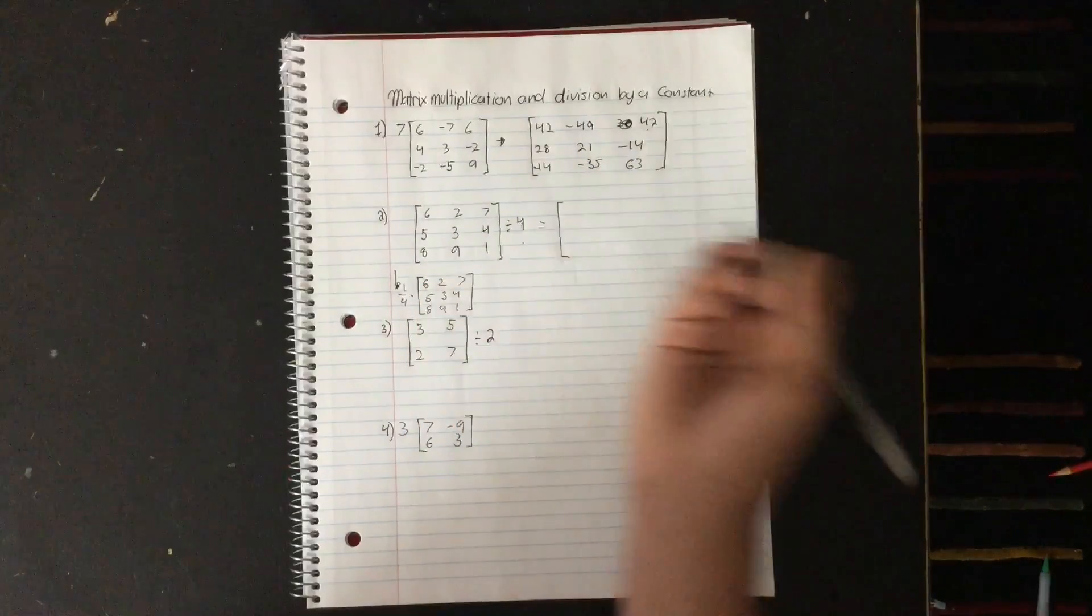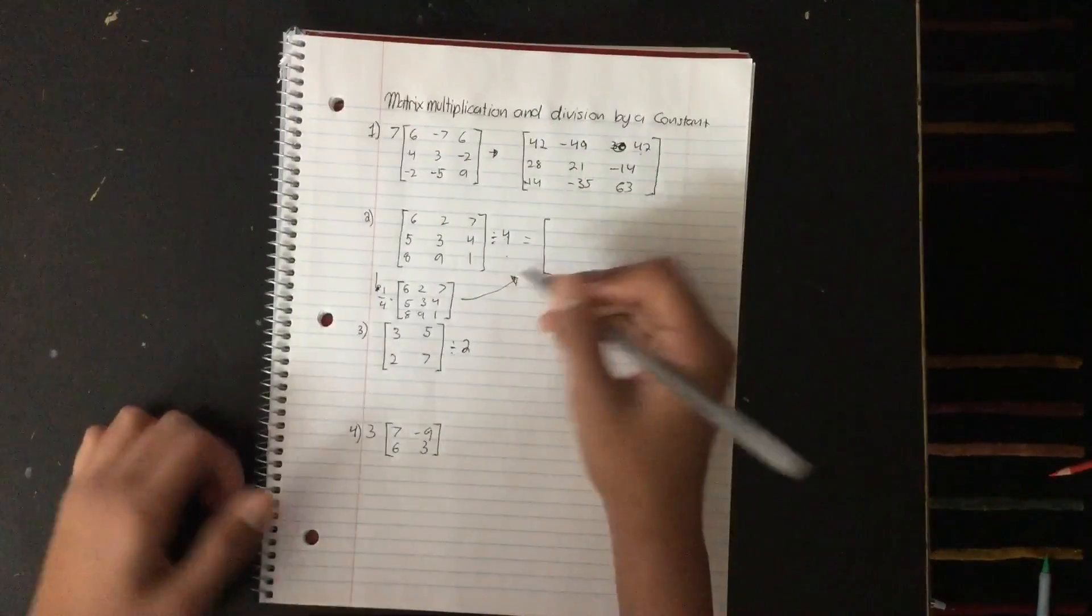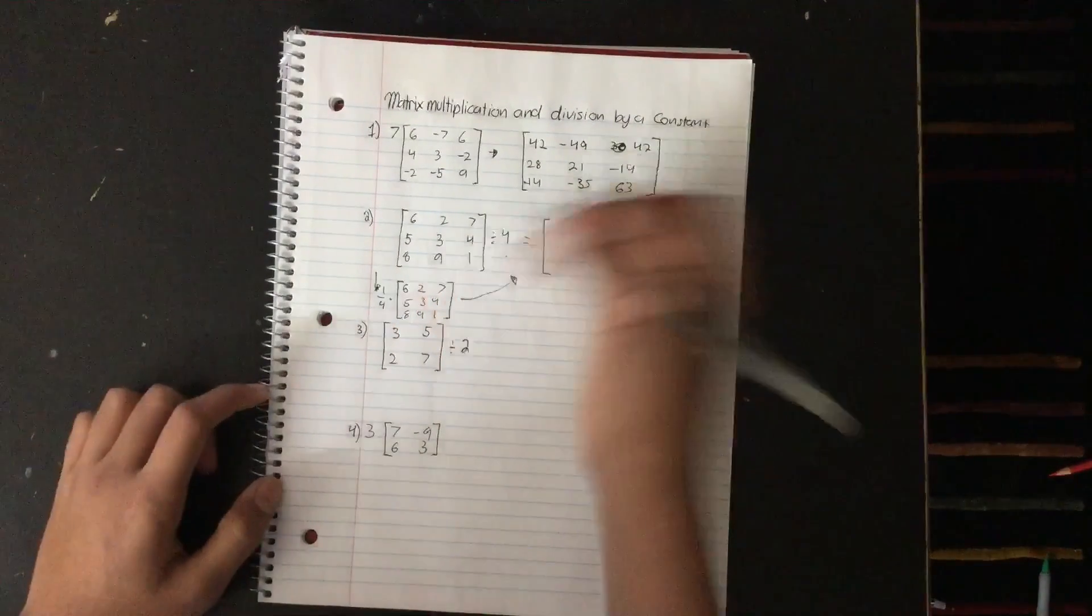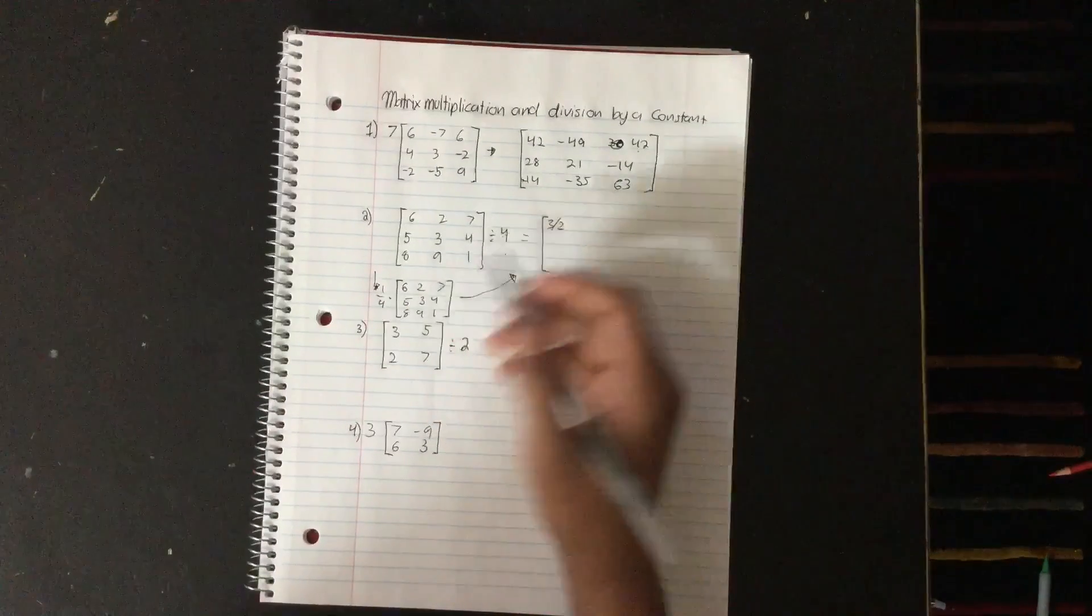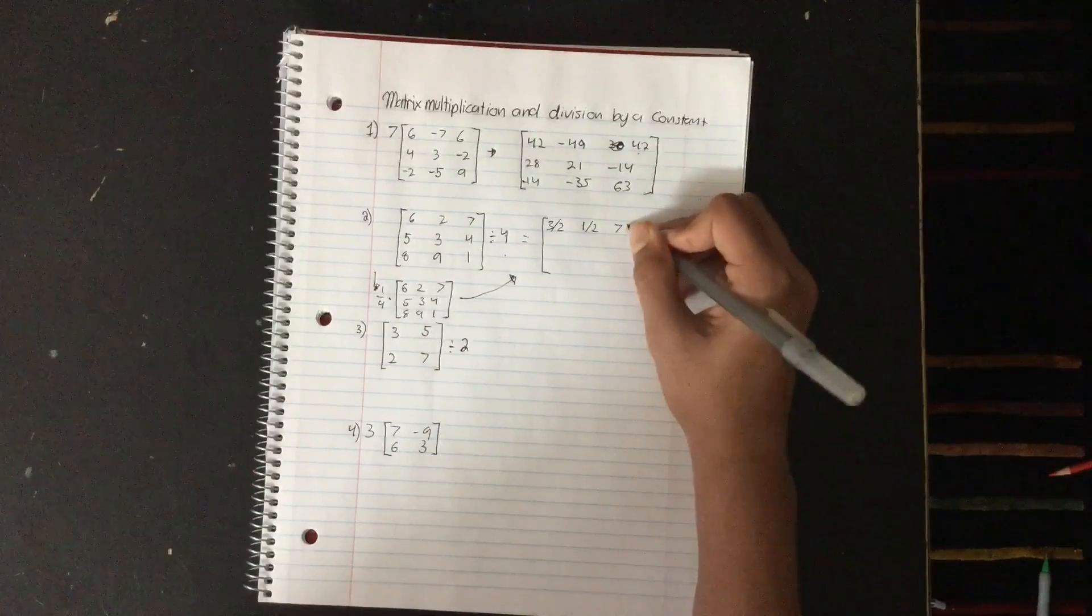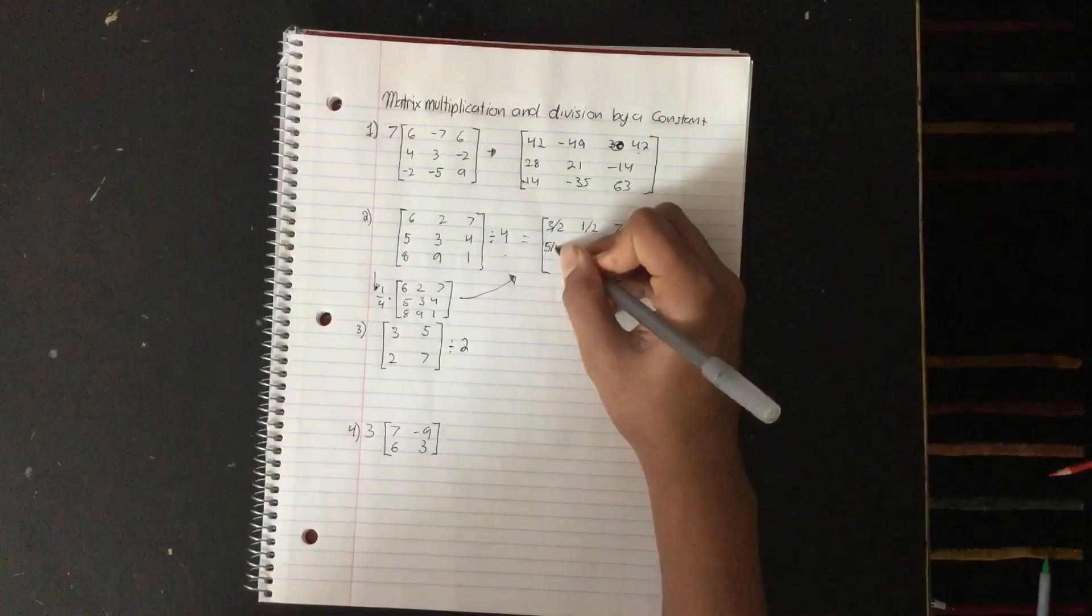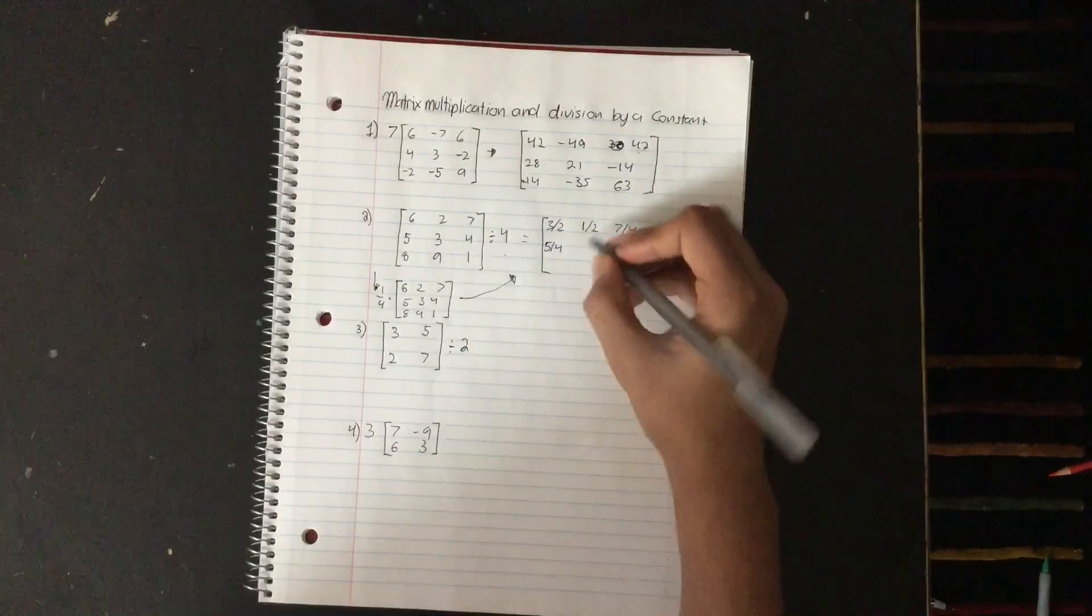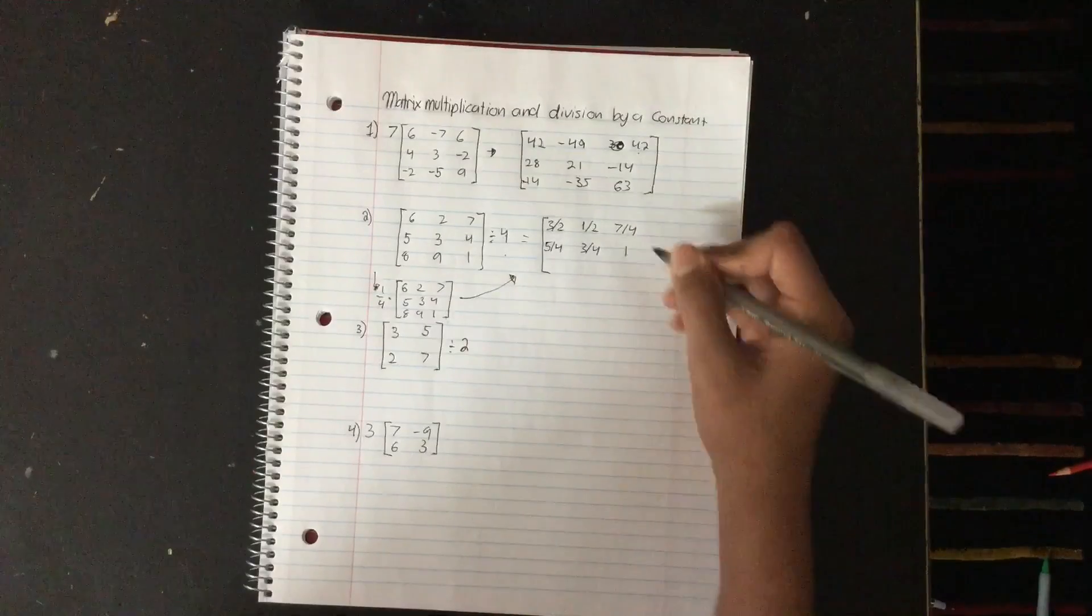So now it's just really simple. So it'll be 6 by 4, which is also equal to 3 by 2. Then the next one will be 2 by 4, which is 1 by 2. The next one will be 7 by 4. The next one will be 5 by 4. The next one will be 3 by 4. It'll be 1 after that.